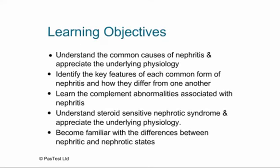First of all, we're going to run through the learning objectives for this lecture. We're going to understand the common causes of nephritis and appreciate the underlying physiology, identify the key features of each common form of nephritis, and learn the complement abnormalities associated with nephritis. Then we'll move on to nephrotic syndrome, steroid-sensitive nephrotic syndrome, and the differences between nephritic and nephrotic states.